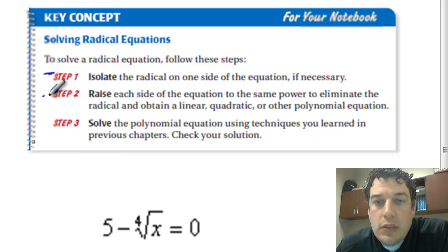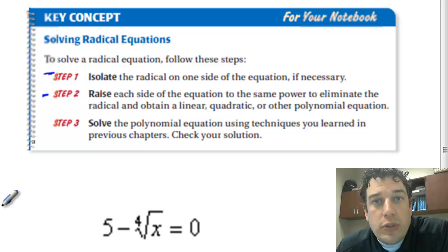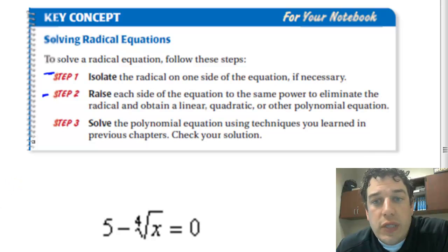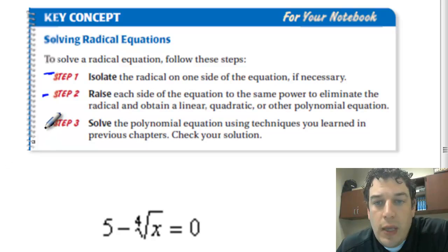Step two is to raise each side of the equation to the same power. So if it's a square root, we would square both sides. If it's a cube root, we would cube both sides. And that would eliminate the radical and obtain a linear, quadratic, or other polynomial equation.